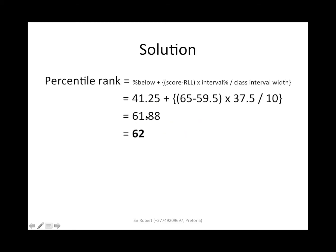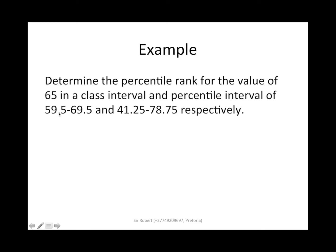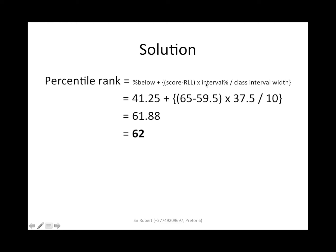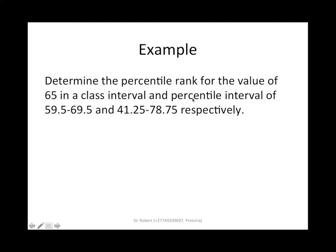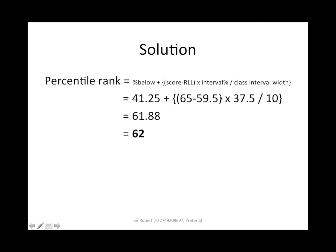Percentage below, then score—remember it's the value we are determining, which is 65. Then we have got the real lower limit, which is 59.5 from the class interval. Then class interval percentage separates this one, so it's 78.75 minus 41.25. So this is the class interval percentage.